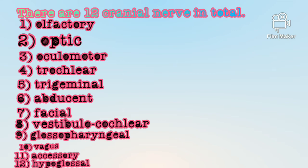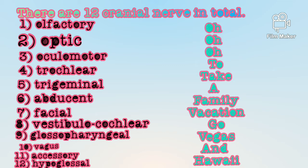So the question is how to learn these. Just remember this one sentence: O, O, O, To Take A Family Vacation, Go Vegas And Hawaii.